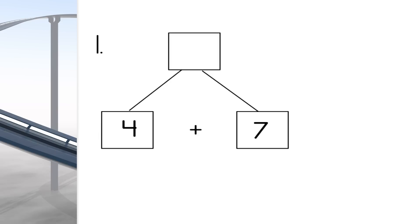In order to get the total at the top, we need to add the addends on the bottom. What is 4 plus 7? We get 11! Great job! Do you see how the Math Mountain works together?